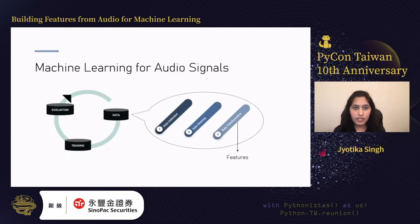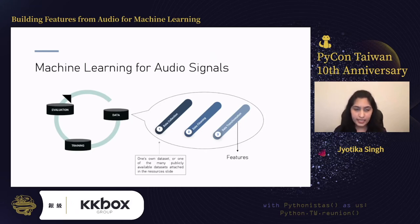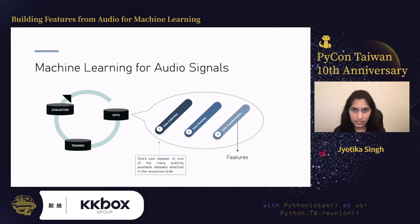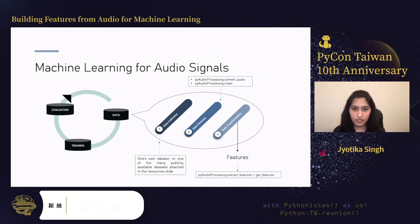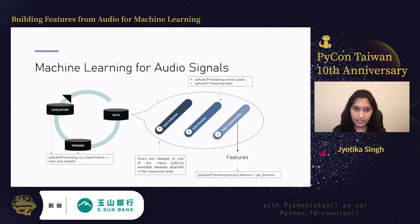Revisiting the machine learning diagram but now focused on audio signals: for data collection, there are many publicly available datasets linked in the resources slide. Data cleaning uses two modules — convert audio for format conversions and clean for processing. Transformation is done using the get_features module. Training and evaluation can be done using train_and_classify, which runs your model through different scikit-learn classifiers.